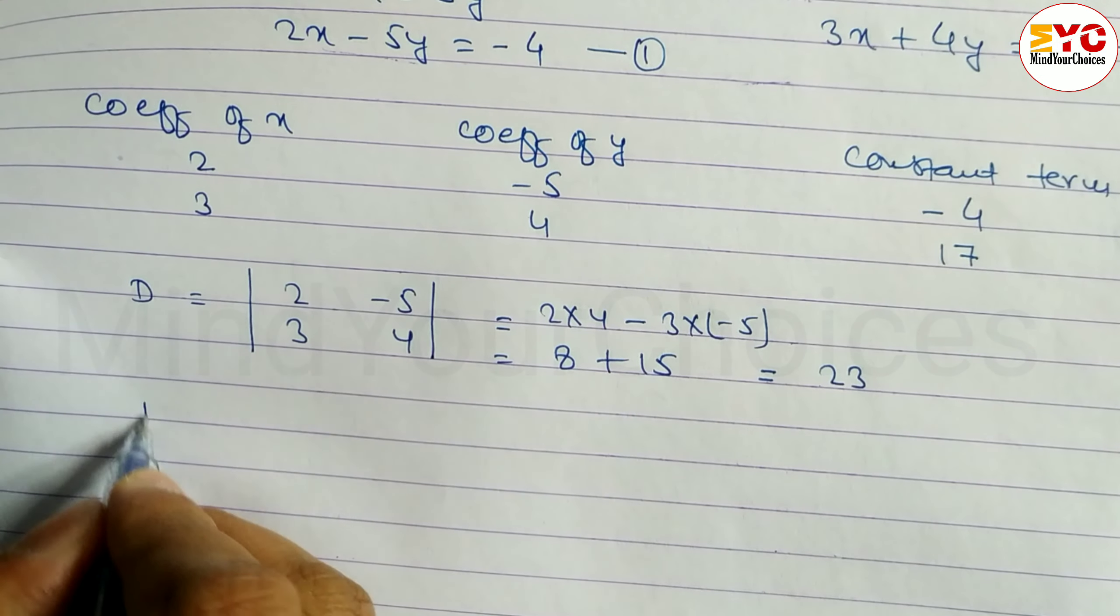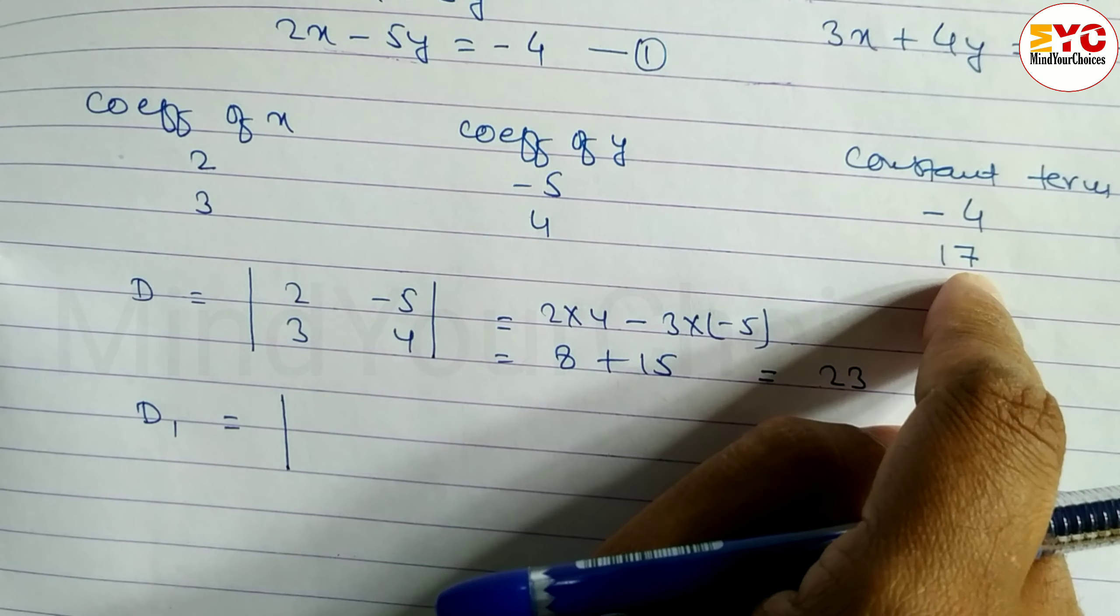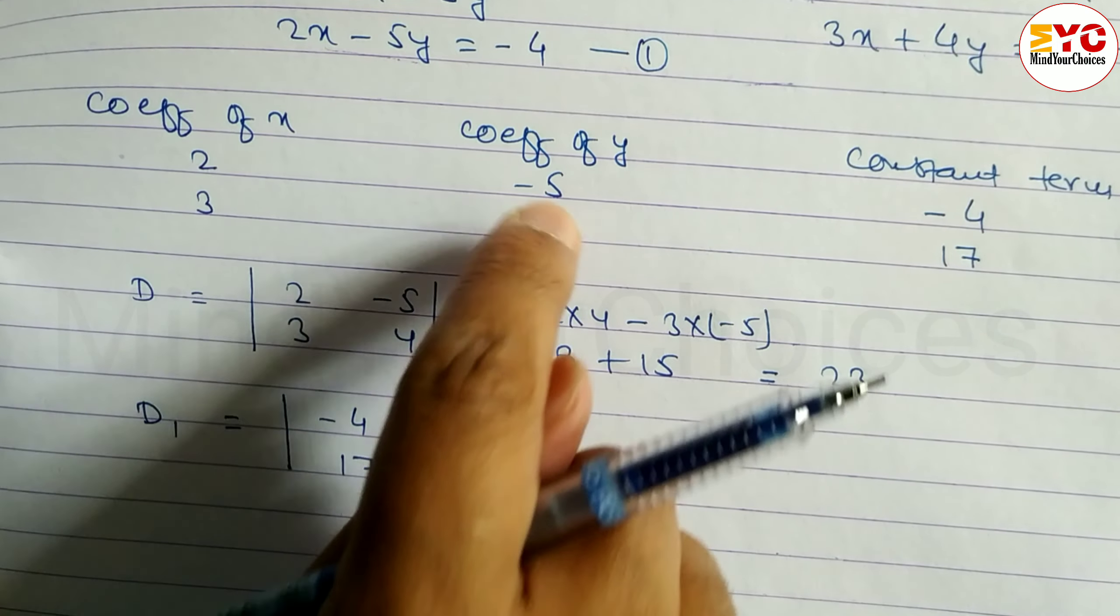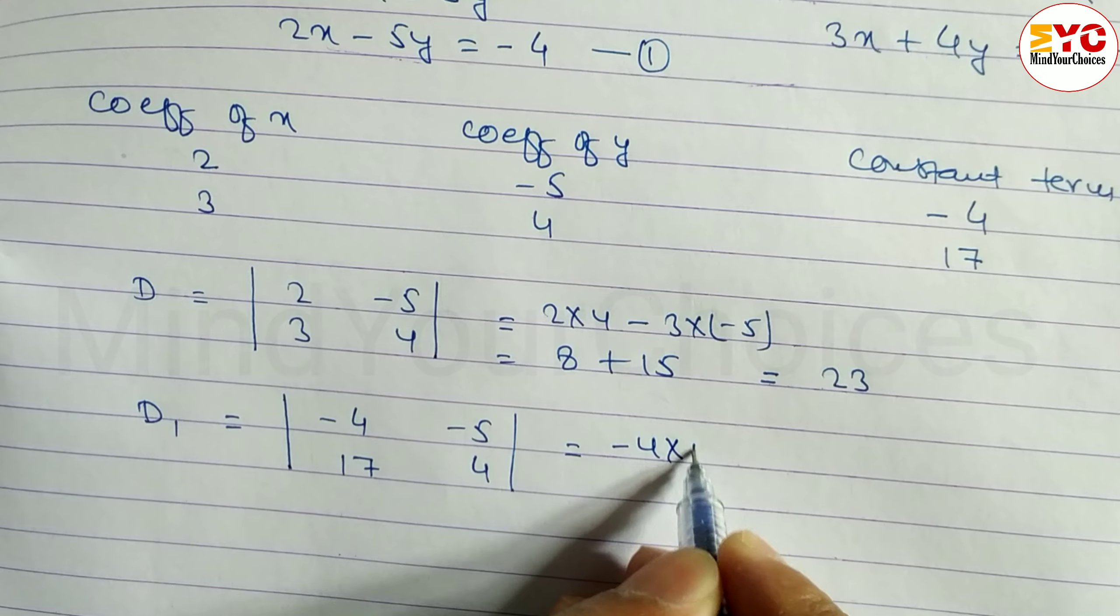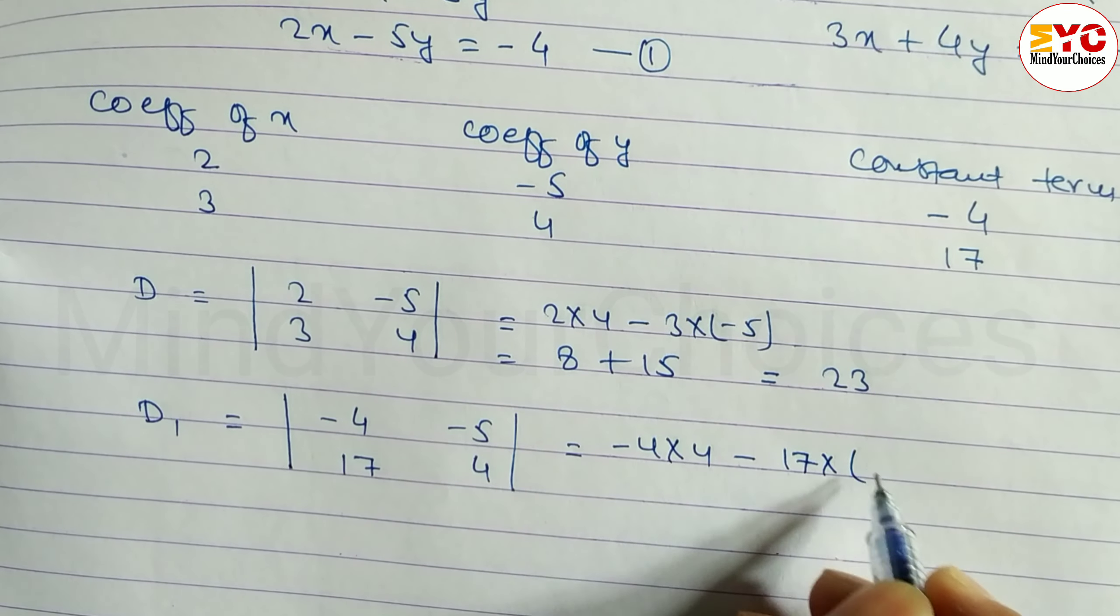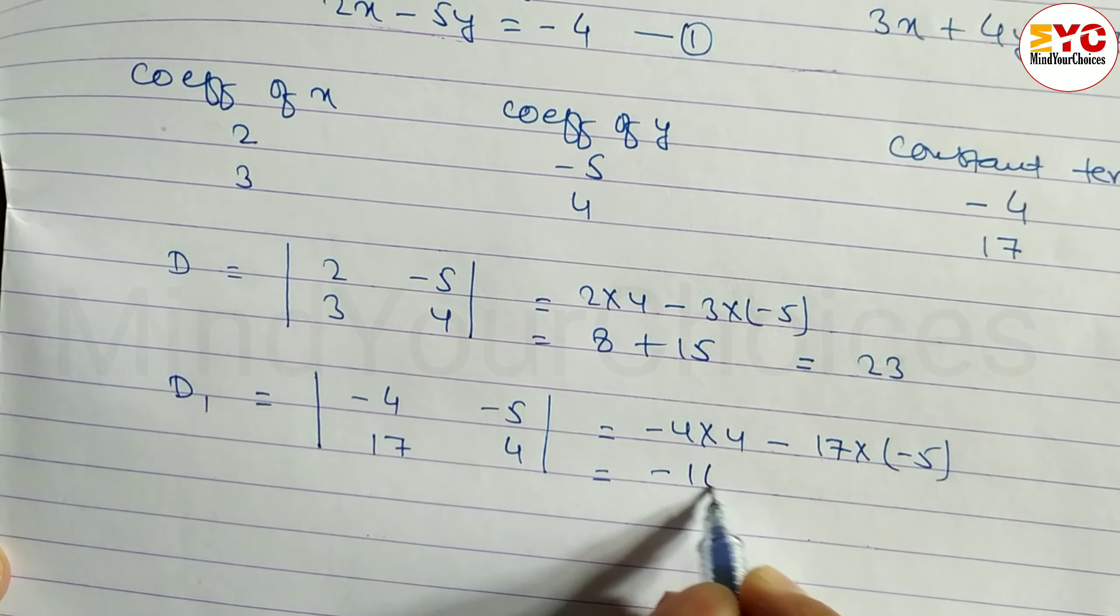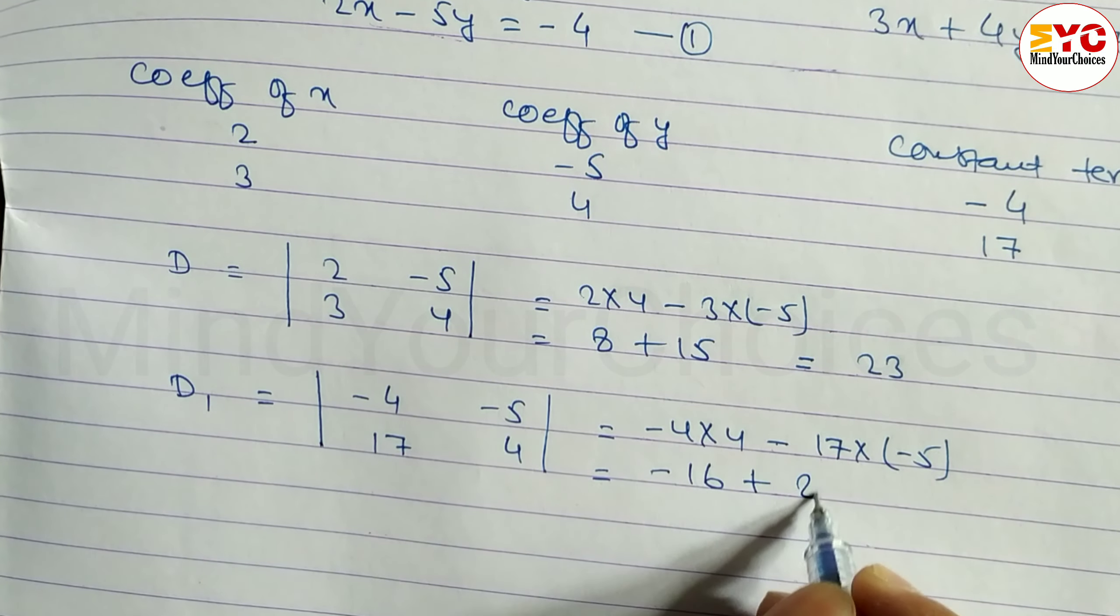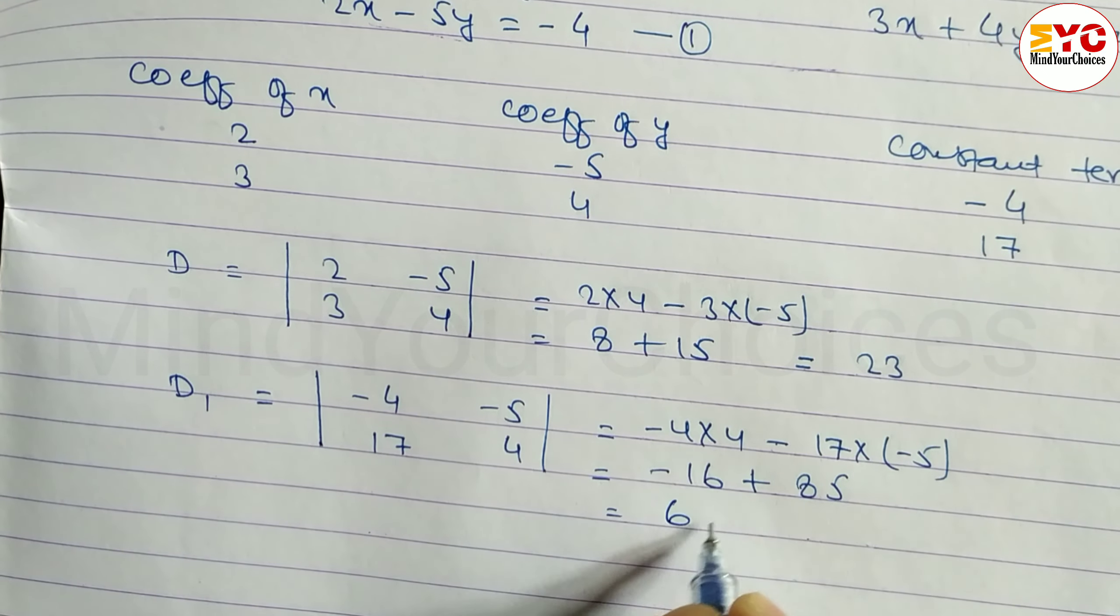Now we have to find out D1. For D1, we take constant number and coefficient of y. Constant numbers are minus 4 and 17. Coefficient of y are minus 5 and 4. Let's multiply: minus 4 into 4 minus 17 into minus 5. Minus 4 into 4 is minus 16. Minus times minus is plus, 17 into 5 is 85. 85 minus 16 is 69. So we can write here 69.